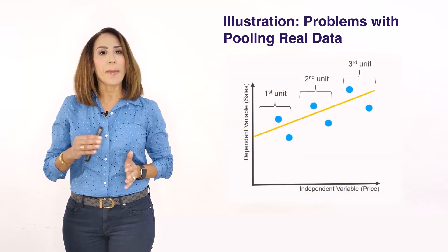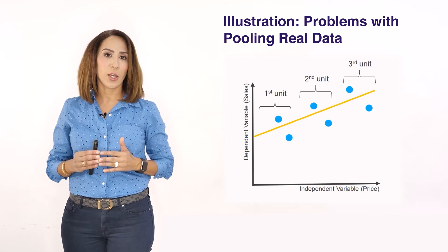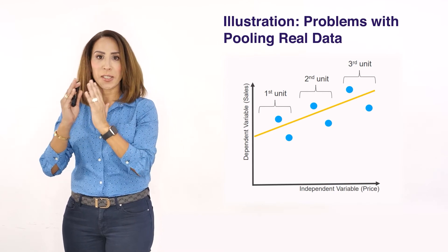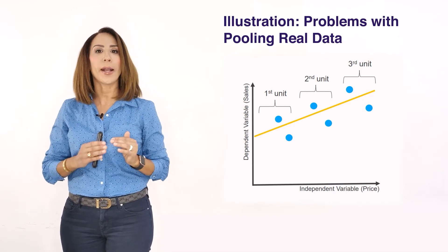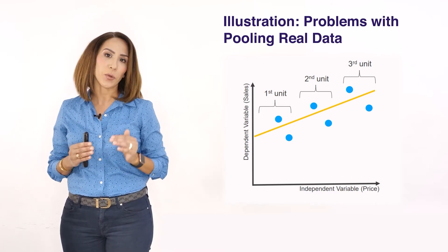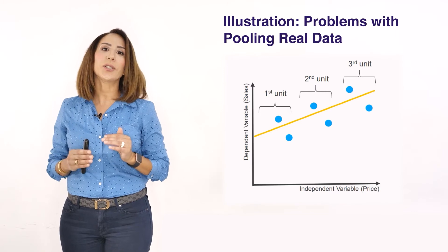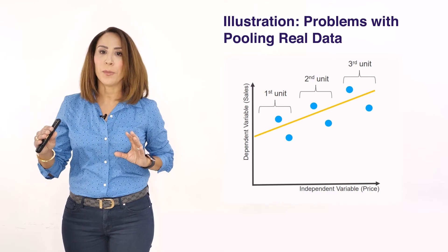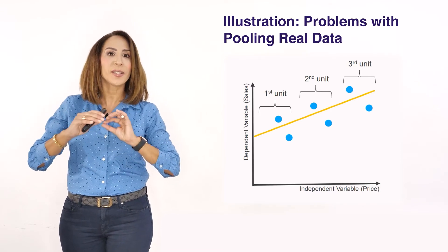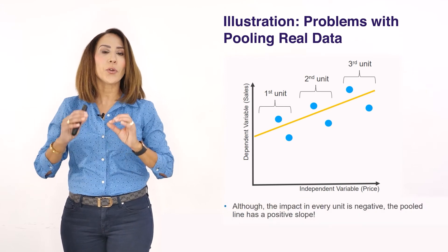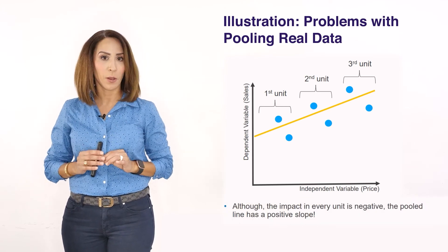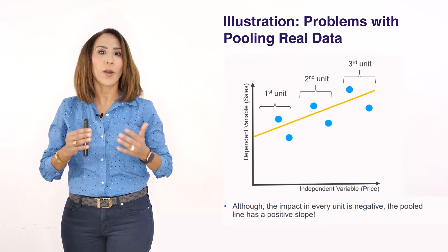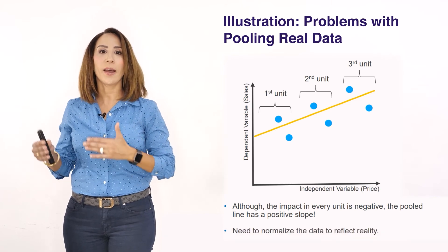The following example depicts the relationship between price and sales across different regions. Focusing on each region separately, you can clearly see that when price increases, sales decrease, and vice versa. However, if we pool the data without any transformation and fit a line through the six points in the chart, the relationship between price and sales becomes positive — which is counterintuitive. This is one of the consequences of running pooled regression without prior data normalization.